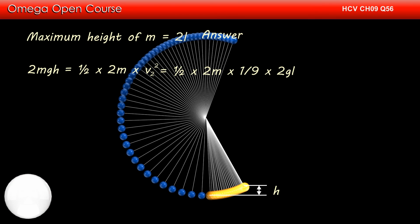Putting the value of v2, this becomes half into 2m into 1 by 9 into 2gl. Simplifying, we get h is equal to L by 9. Thus, maximum height for the M particle is 2L and for the 2M particle is L by 9. This is the answer to part B of the question.